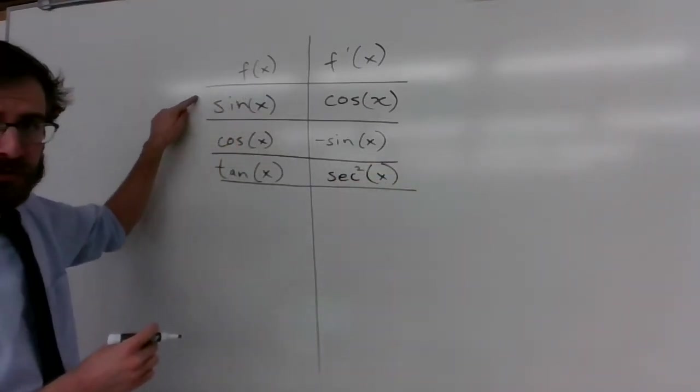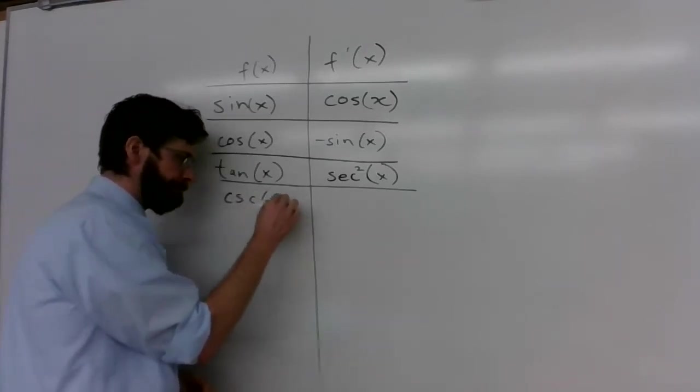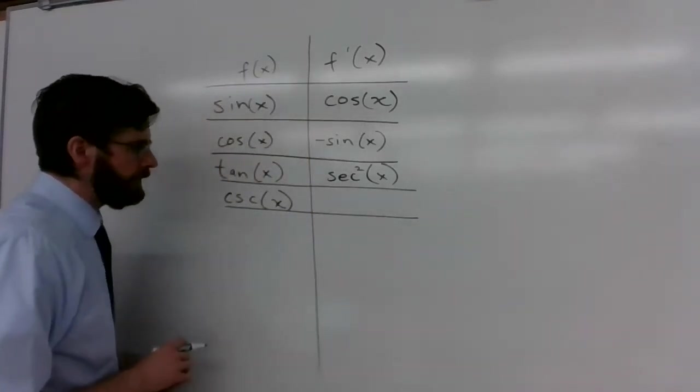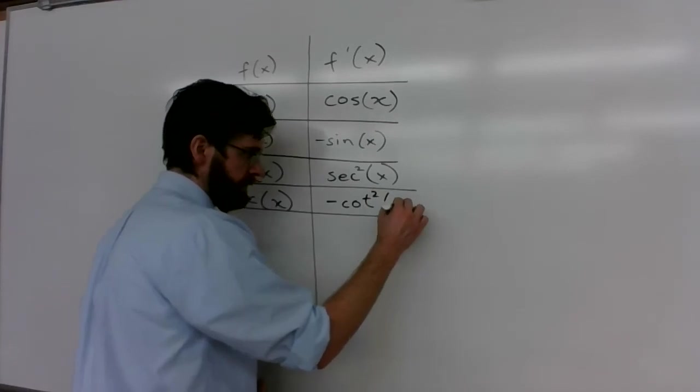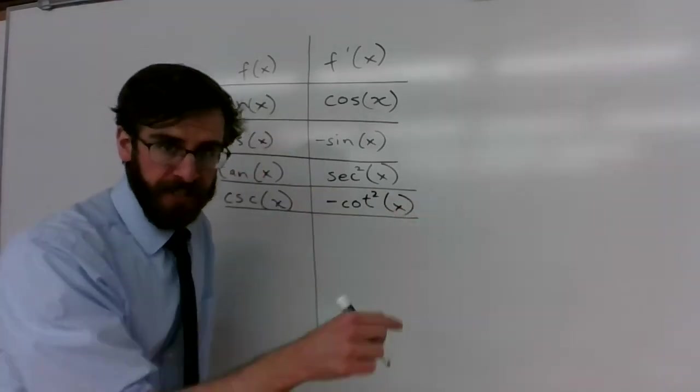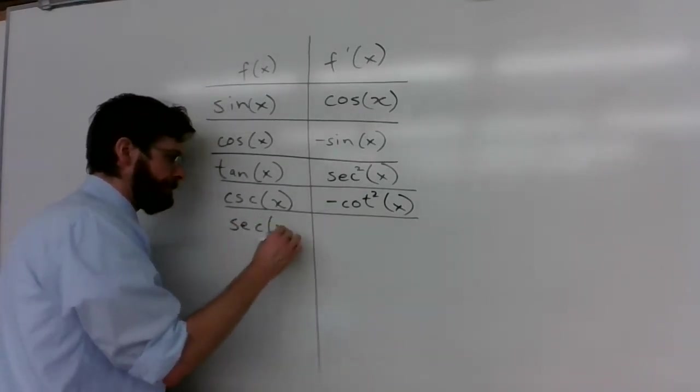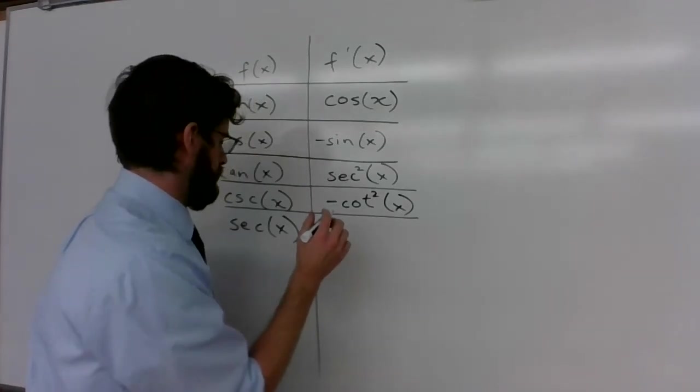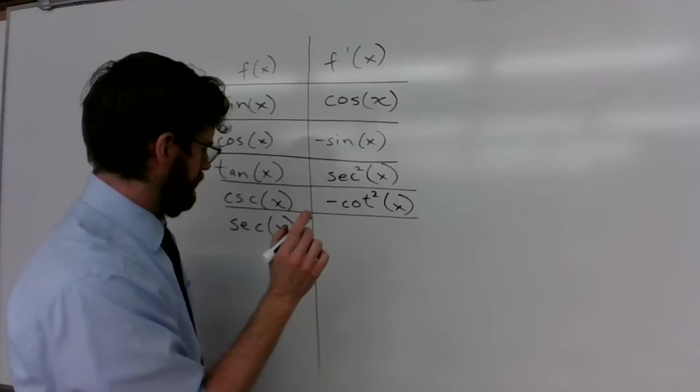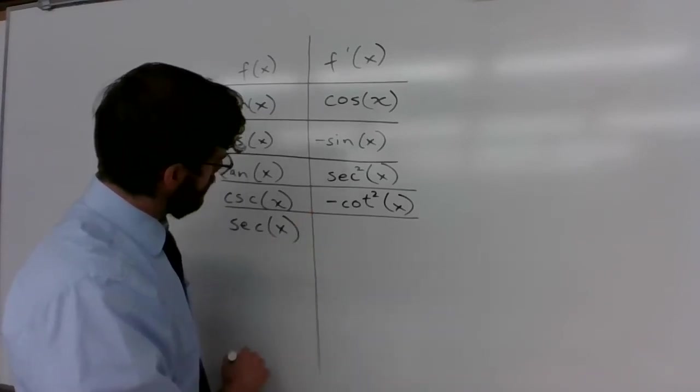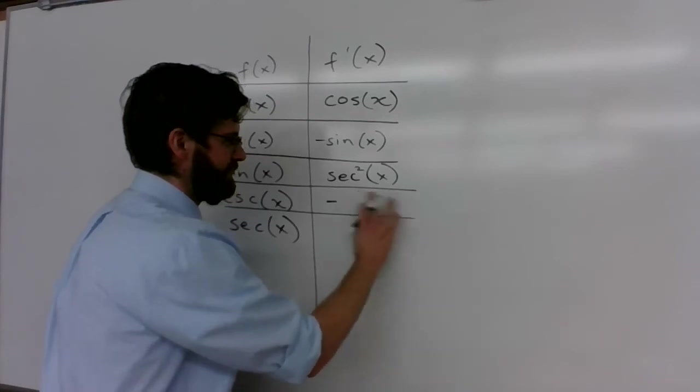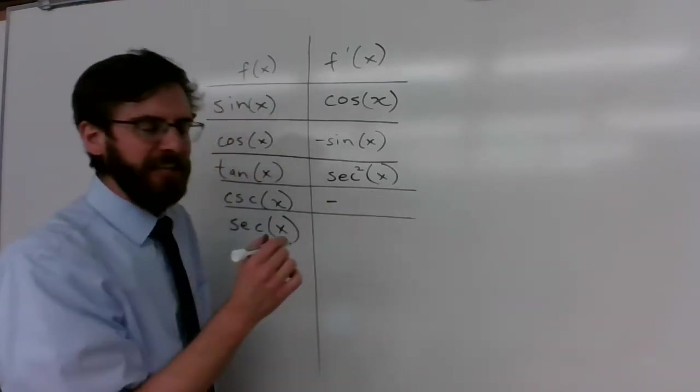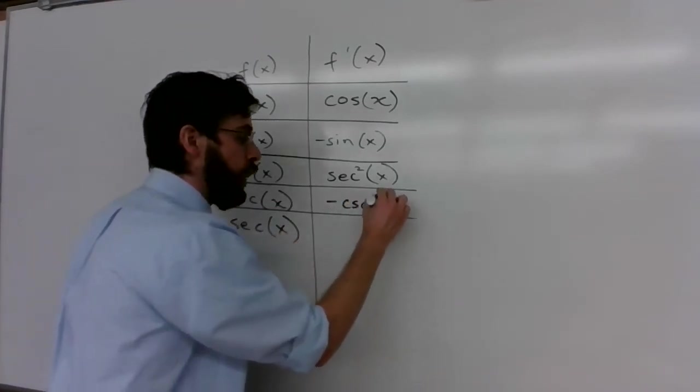So now let's recycle. Who's reciprocal to sine of x? Cosecant. The derivative of cosecant of x is negative cotangent squared of x. So it's like the negative of cotangent times cotangent. Secant of x wait a second. That's wrong. I'm sorry. My apologies. It's actually the derivative of cosecant of x is negative cosecant of x cotangent of x.